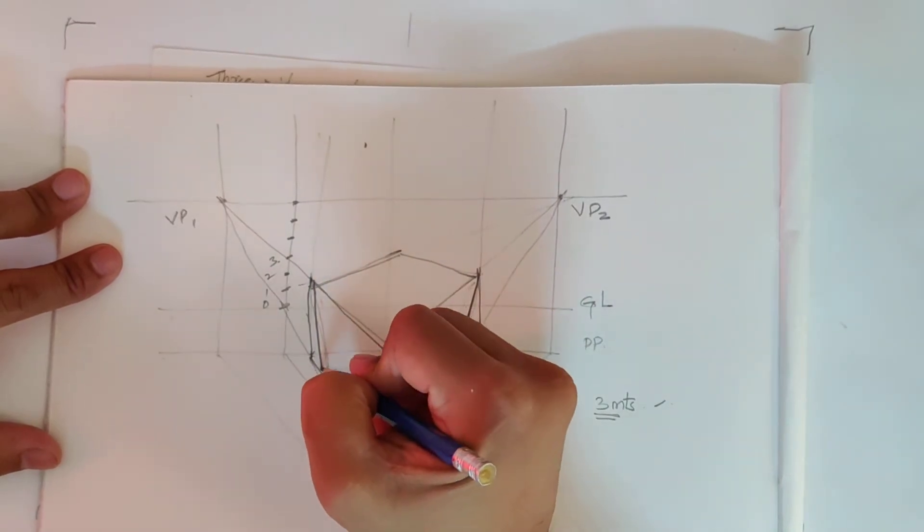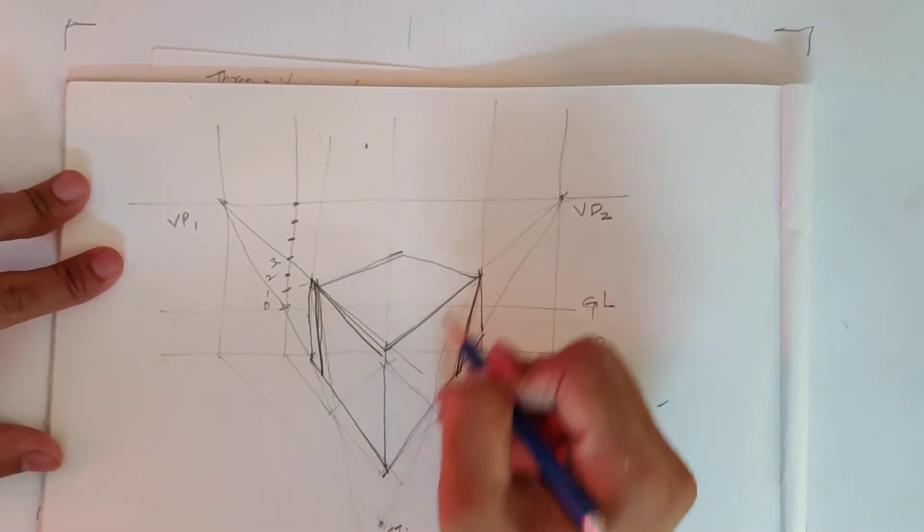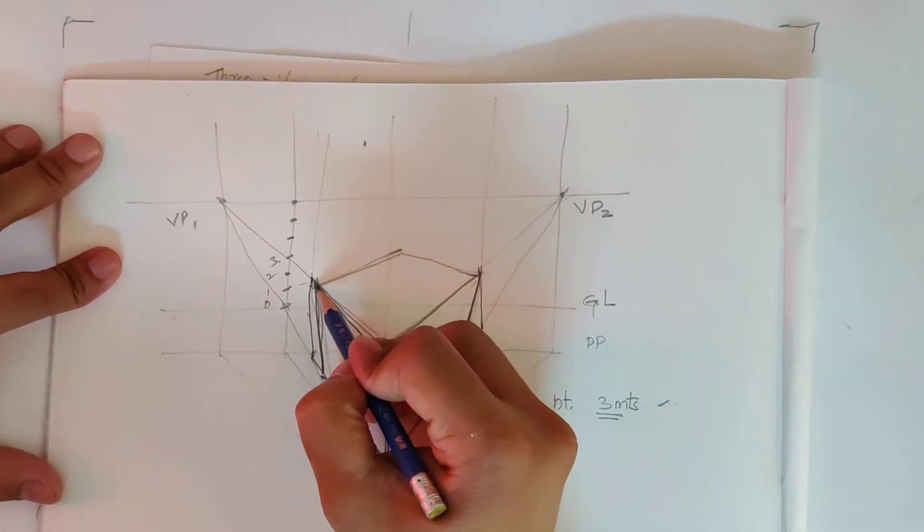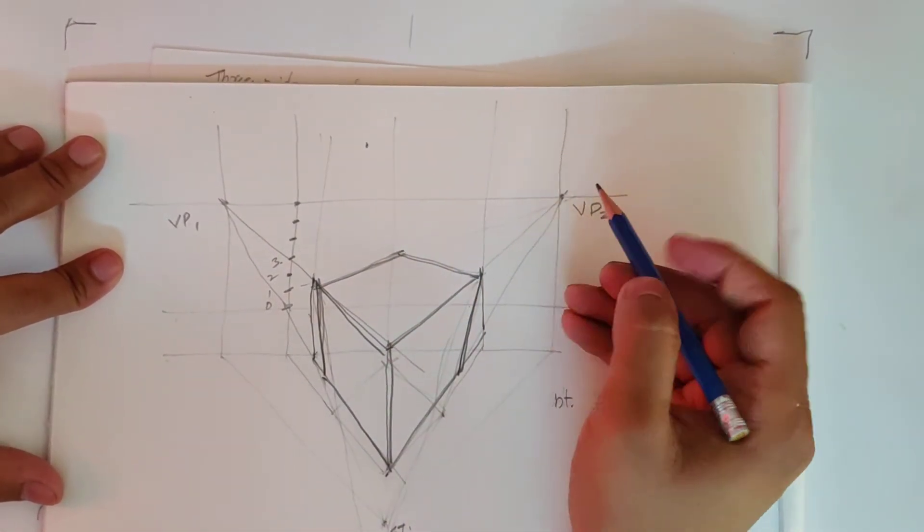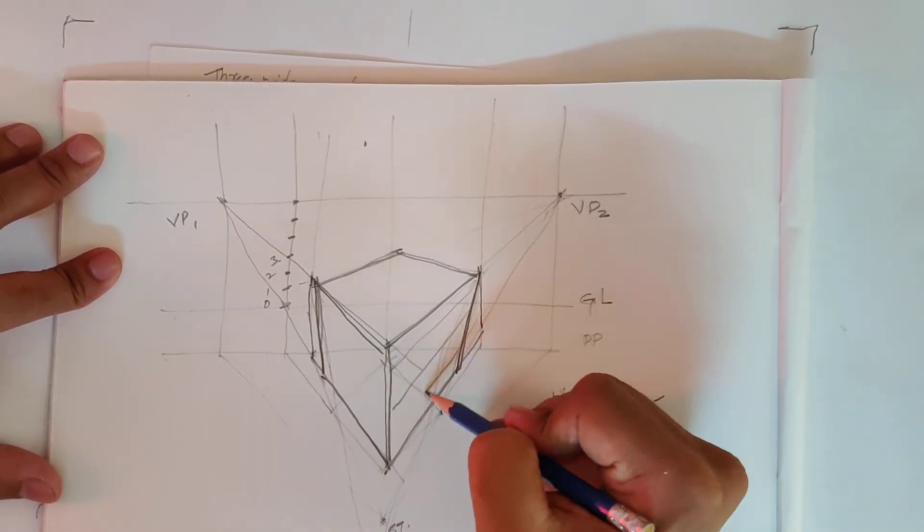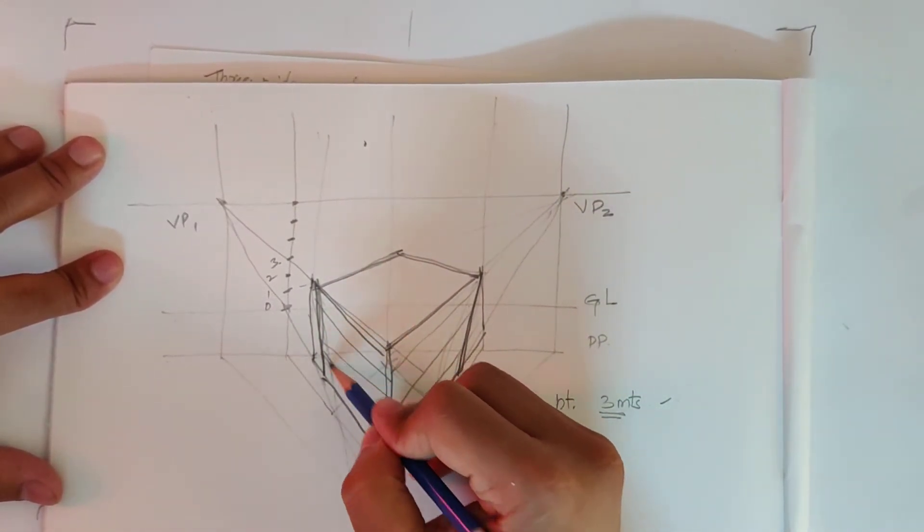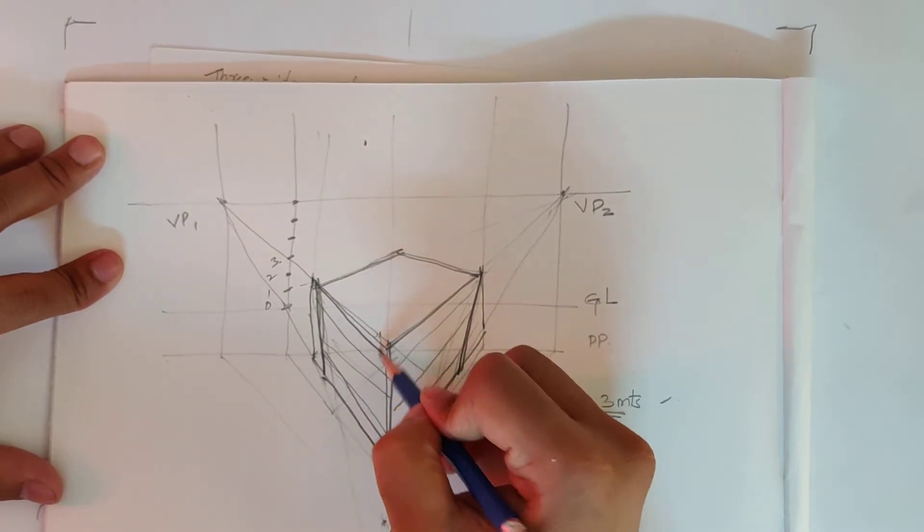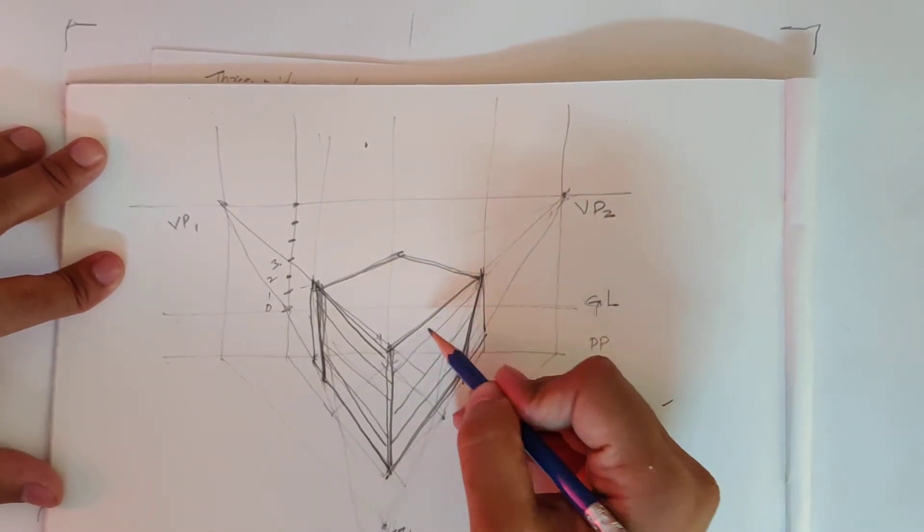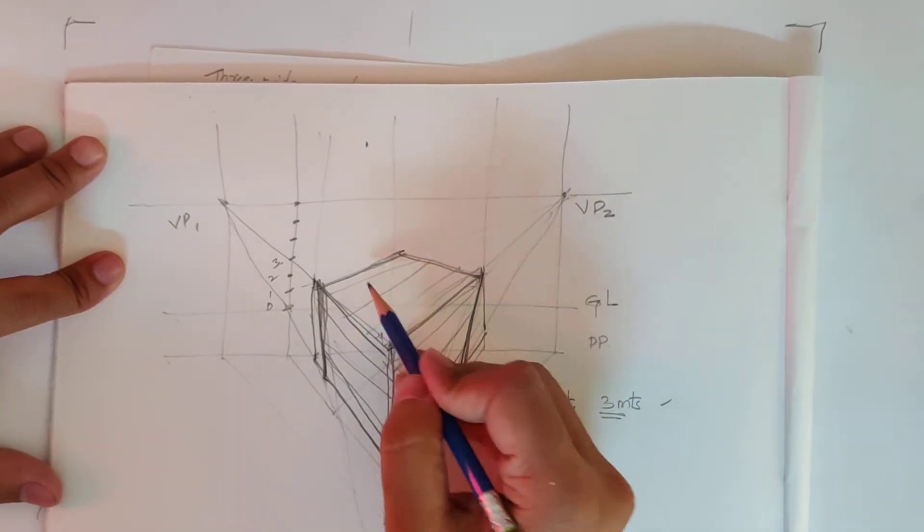So my three-point perspective is ready now, with my sides and with my heights which are also vanishing. So this type of view is known as bird's eye view.